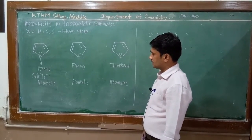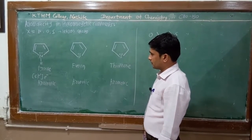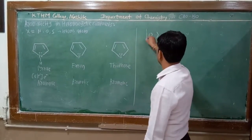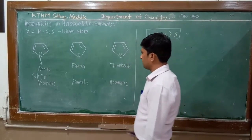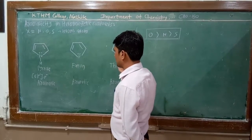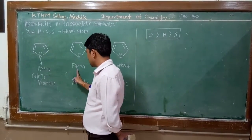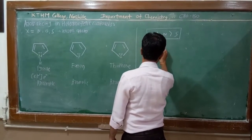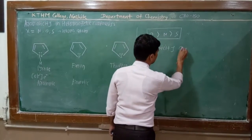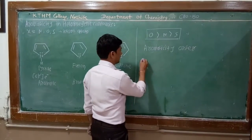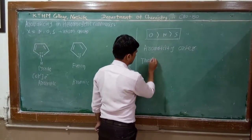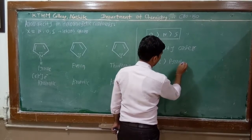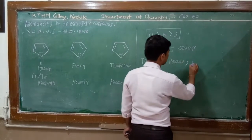The answer to the question depends on electronegativity. The electronegativity of oxygen is more than that of nitrogen and sulfur. Therefore the aromaticity order is: thiophene is more aromatic than pyrrole, and pyrrole is more aromatic than furan.